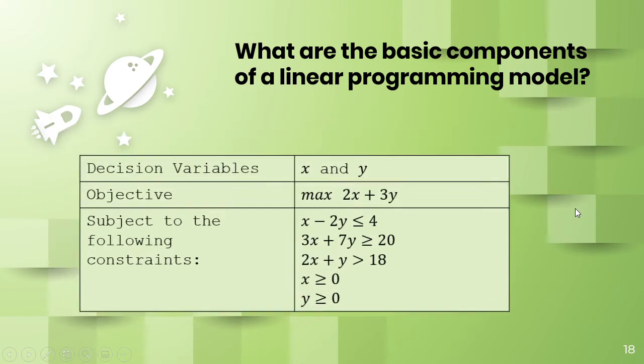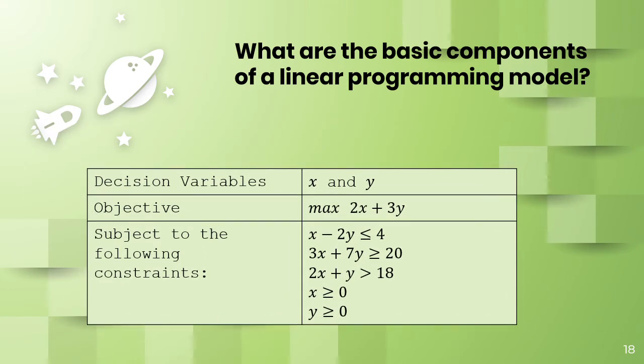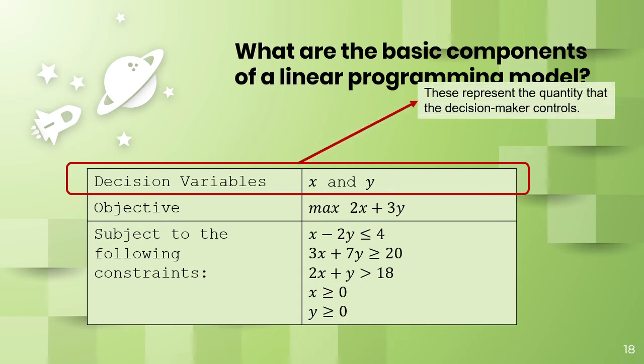For the basic components of a linear programming model, suppose that this is our model. The first one is the decision variables. The decision variables represent the quantity that the decision maker controls - the number of objects that he wants to sell or manufacture.